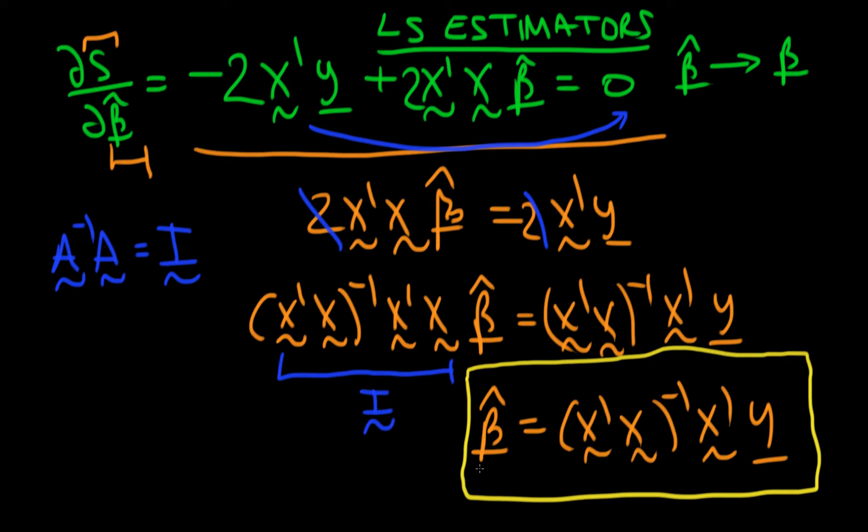So this is the form of least squared estimators when I've got p parameters in my population, or when I've got p independent variables causing changes in a dependent variable.